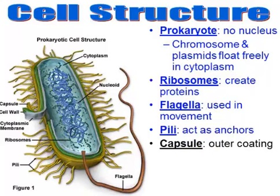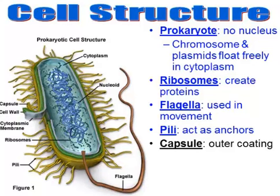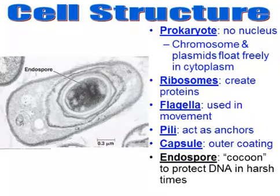Notice there are actually three layers on the outside of this bacteria. There is a gray cytoplasmic membrane (the cell membrane), a green layer called the cell wall, and some bacteria even have a third golden outer layer called a capsule. This is another reason why some bacteria can be so difficult to treat — they have three outer layers of defense.